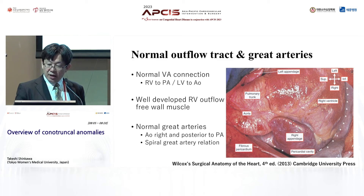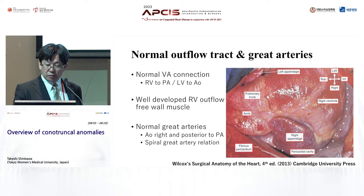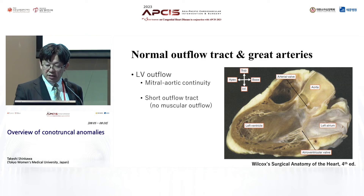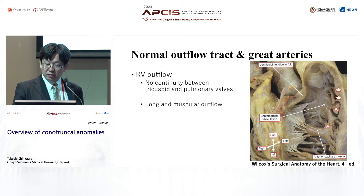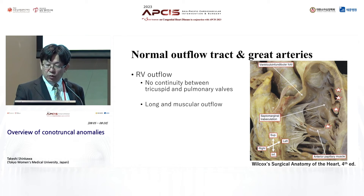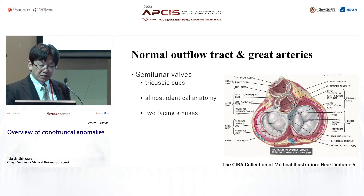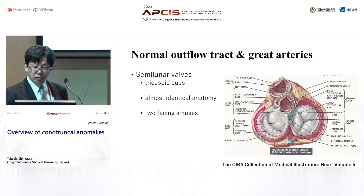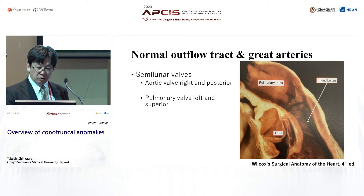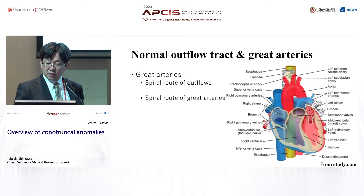Looking inside the heart, in the LV outflow tract you can see mitral-aortic continuity — there is no musculature between the AV valve and semilunar valve in the left ventricle, making the LV outflow short with no musculature. In comparison, the RV outflow has no continuity between the tricuspid valve and pulmonary valve. In the RV there is a well-developed infundibulum and free wall musculature with a long, muscular outflow tract. The semilunar valves — aortic and pulmonary — were developed from similar fetal tissue and have almost identical anatomy with tricuspid cusps. However, their locations differ: the pulmonary valve is more cranial compared to the aortic valve. The outflow tracts and great arteries have a spiral relationship, crossing each other.